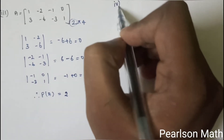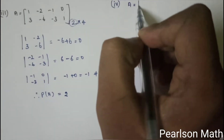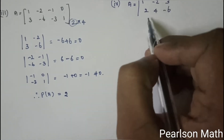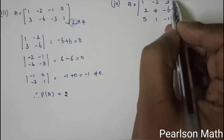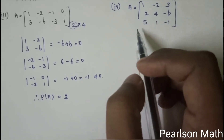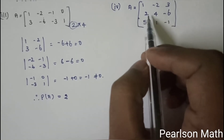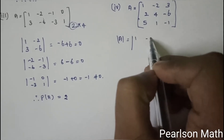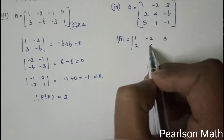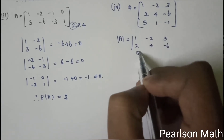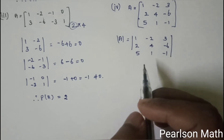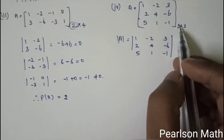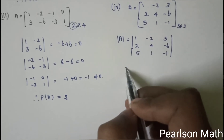Fourth sum: A is equal to [1, -2, 3; 2, 4, -6; 5, 1, -1]. It is a 3×3 matrix. Rank of A ≤ minimum(3, 3) = 3, so rank can be at most 3.